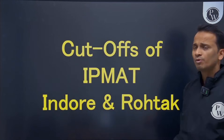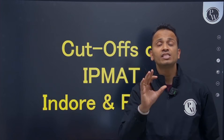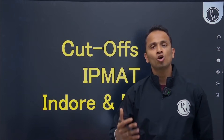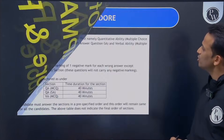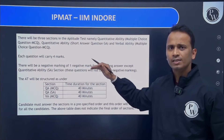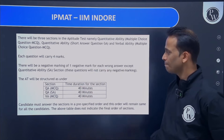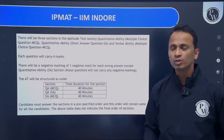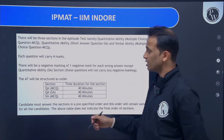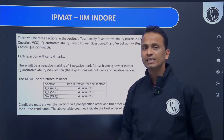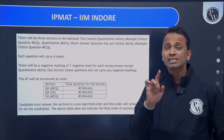First, we'll talk about IPMAT Indore — some very important things from previous years and the different sectional cut-offs. IIM Indore has two parameters tested across three sections: an MCQ section of quantitative aptitude with 40 minutes, a subjective answer (SA) section in QA with 40 minutes, and a verbal ability MCQ section with 40 minutes. Total exam duration is 120 minutes with sectional time limits.